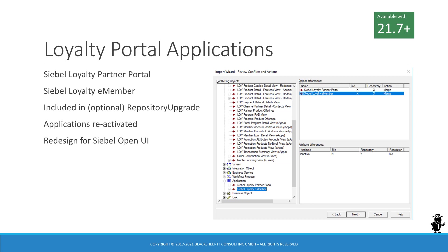The repository upgrade utility is an optional step in the update process. Customers willing to uptake the non-mandatory repository content can run the utility, which produces an integration workspace with all repository changes. That integration workspace can then be tested, inspected, and — once the decision to adopt the changes is made — rebased and delivered into the main or parent integration workspace.